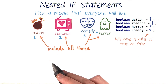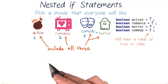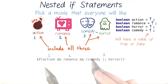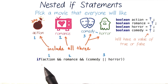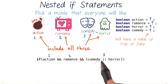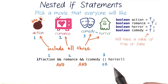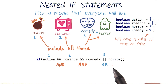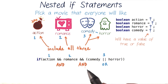We have to focus on writing a test condition that involves all three of our preferences. Our first preference is action, our second is romance, and our third preference is either comedy or horror.